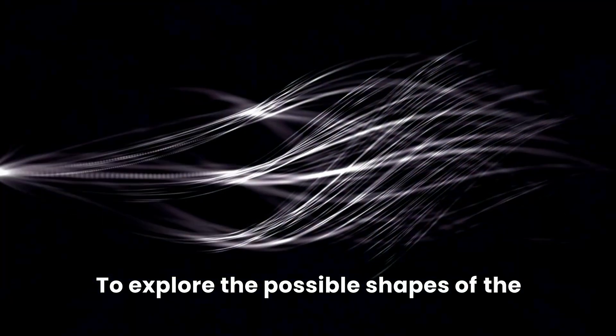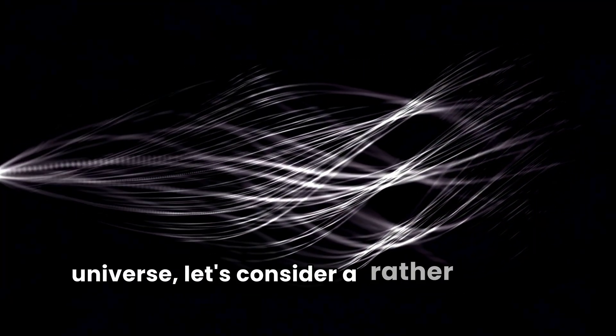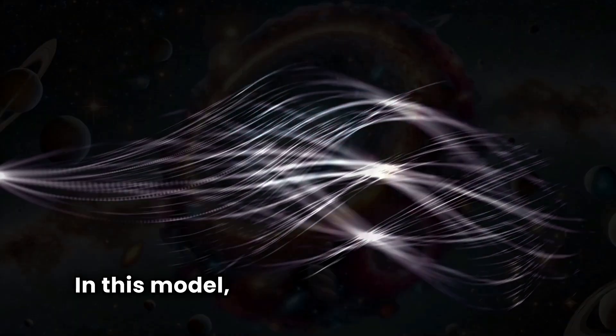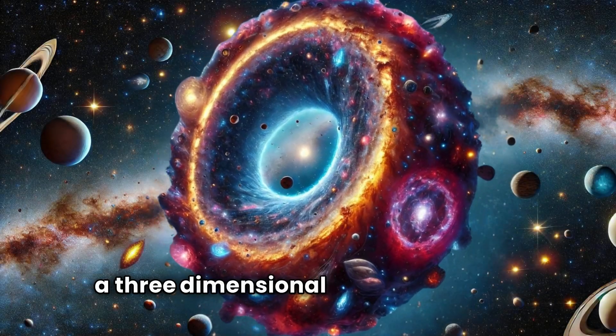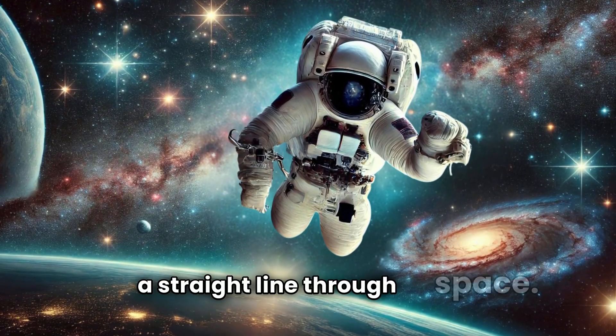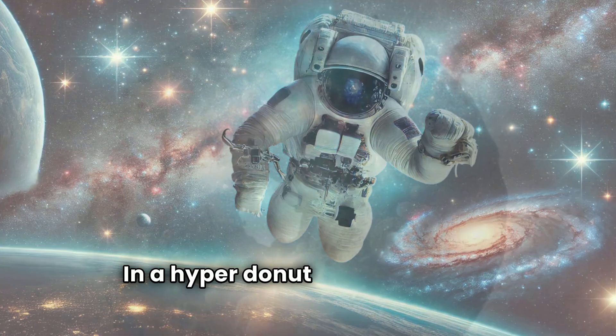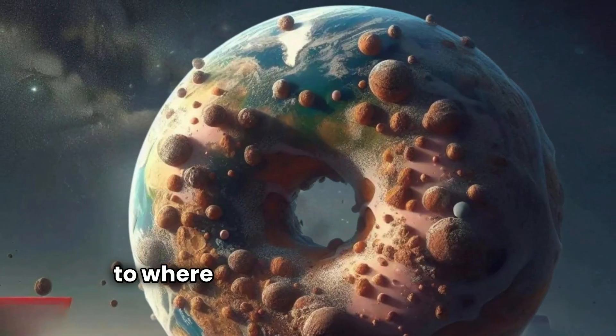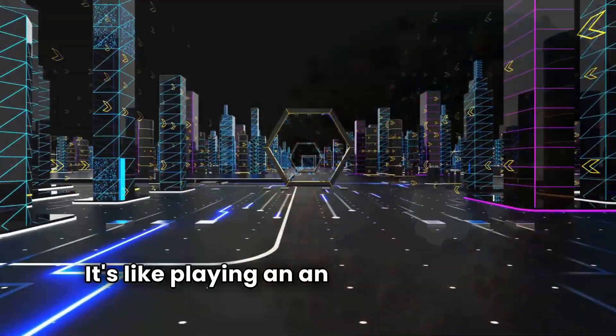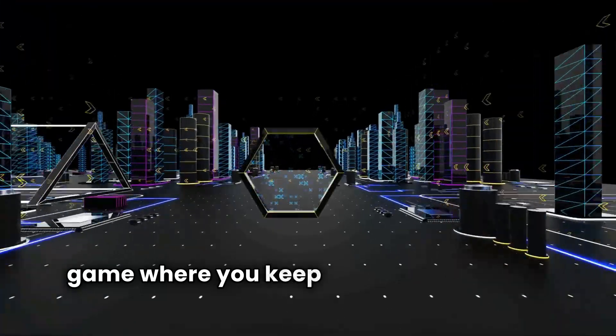To explore the possible shapes of the universe, let's consider a rather delicious example: the hyper-donut universe. In this model, the universe is shaped like a three-dimensional torus, or a donut. Imagine you're an astronaut traveling in a straight line through space. In a hyper-donut universe, you'd eventually loop back to where you started, without ever encountering an edge. It's like playing an endless level of a video game where you keep coming back to the beginning.